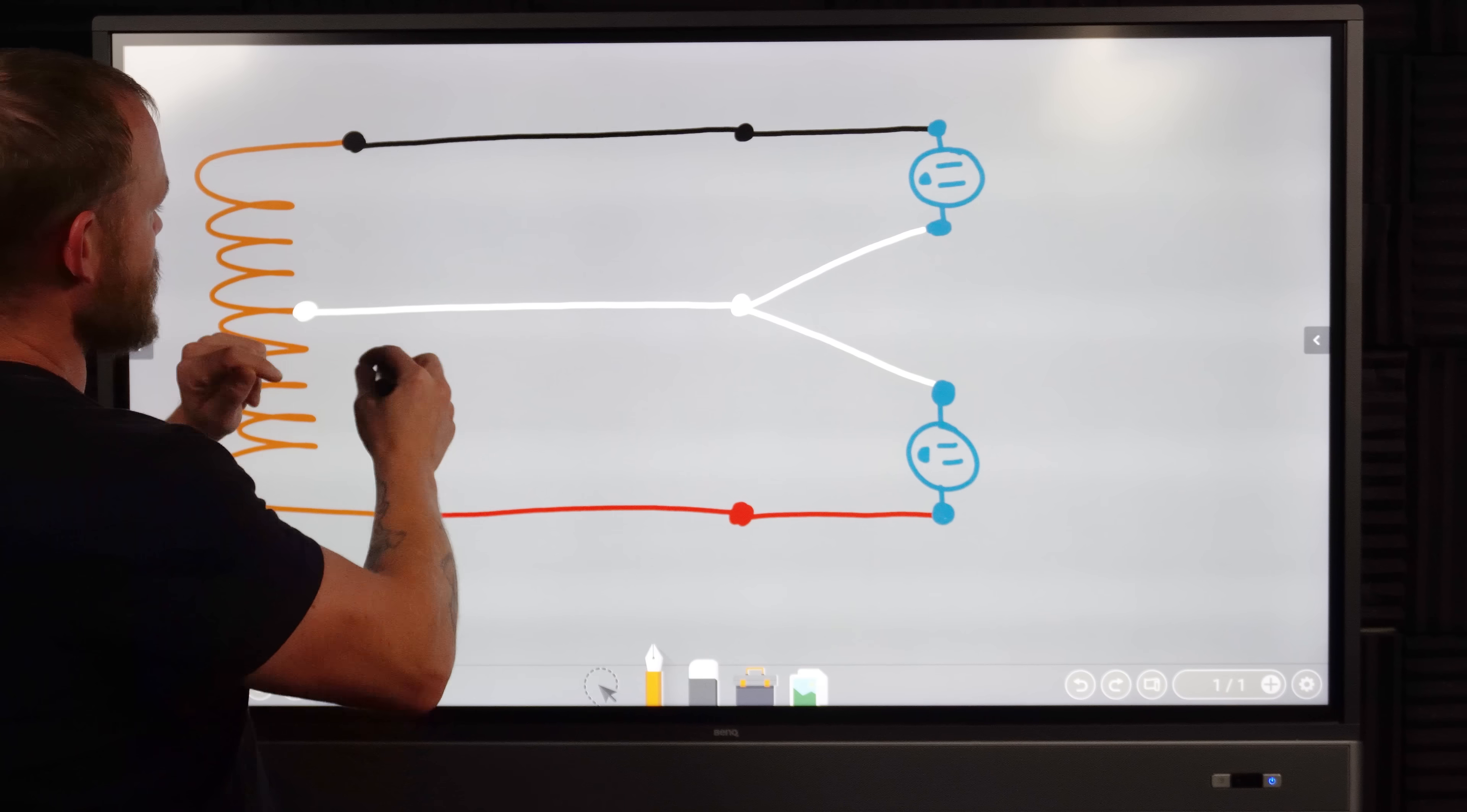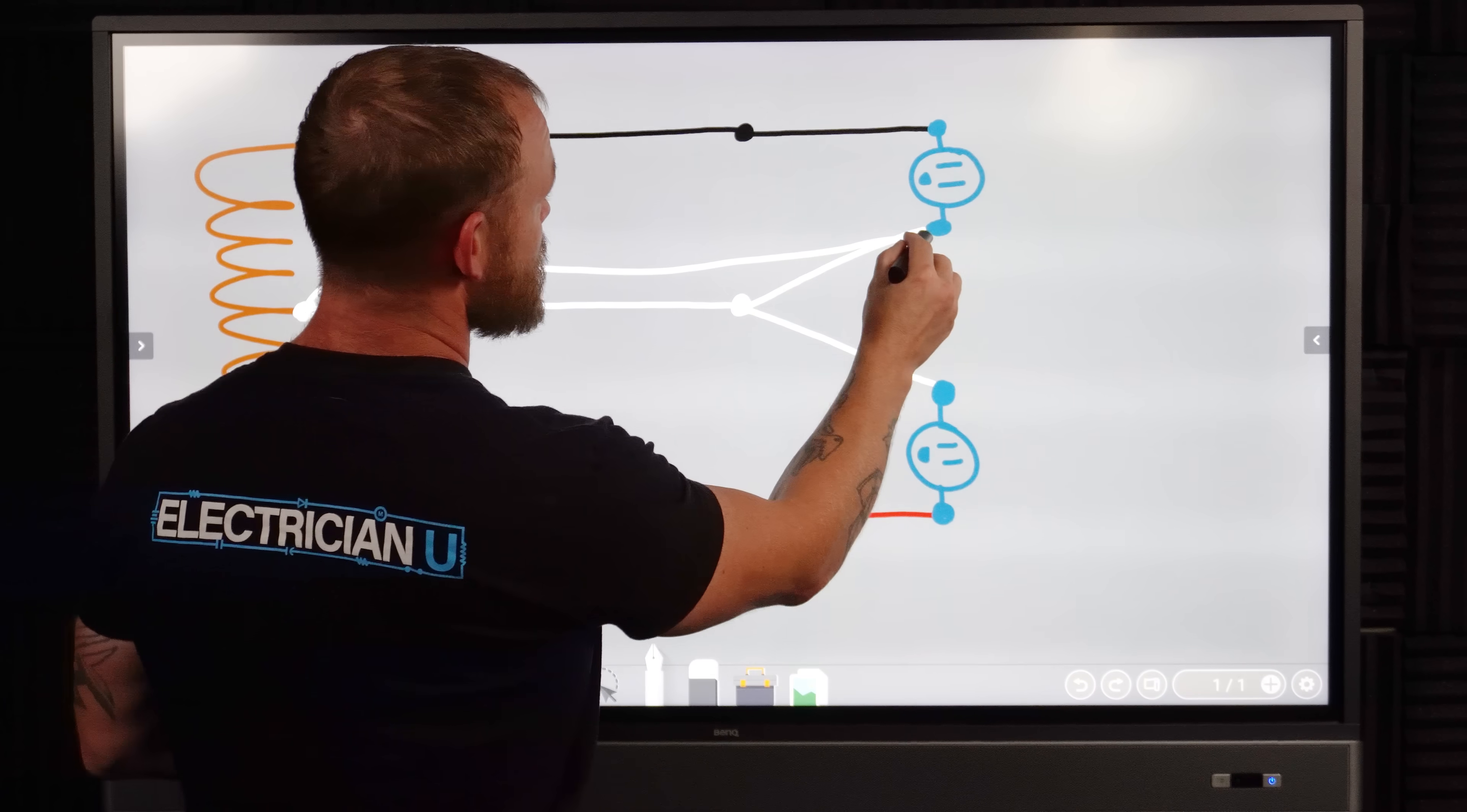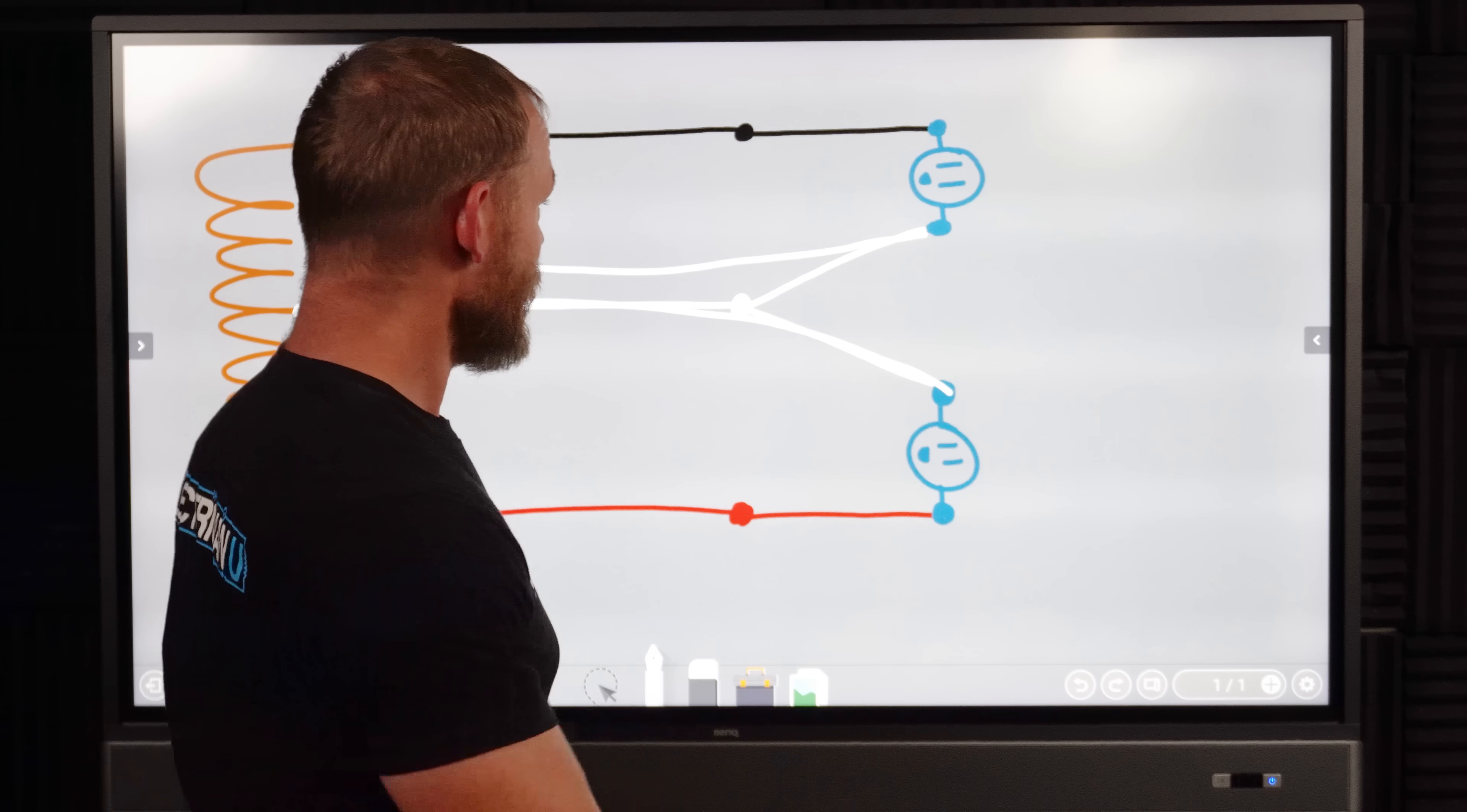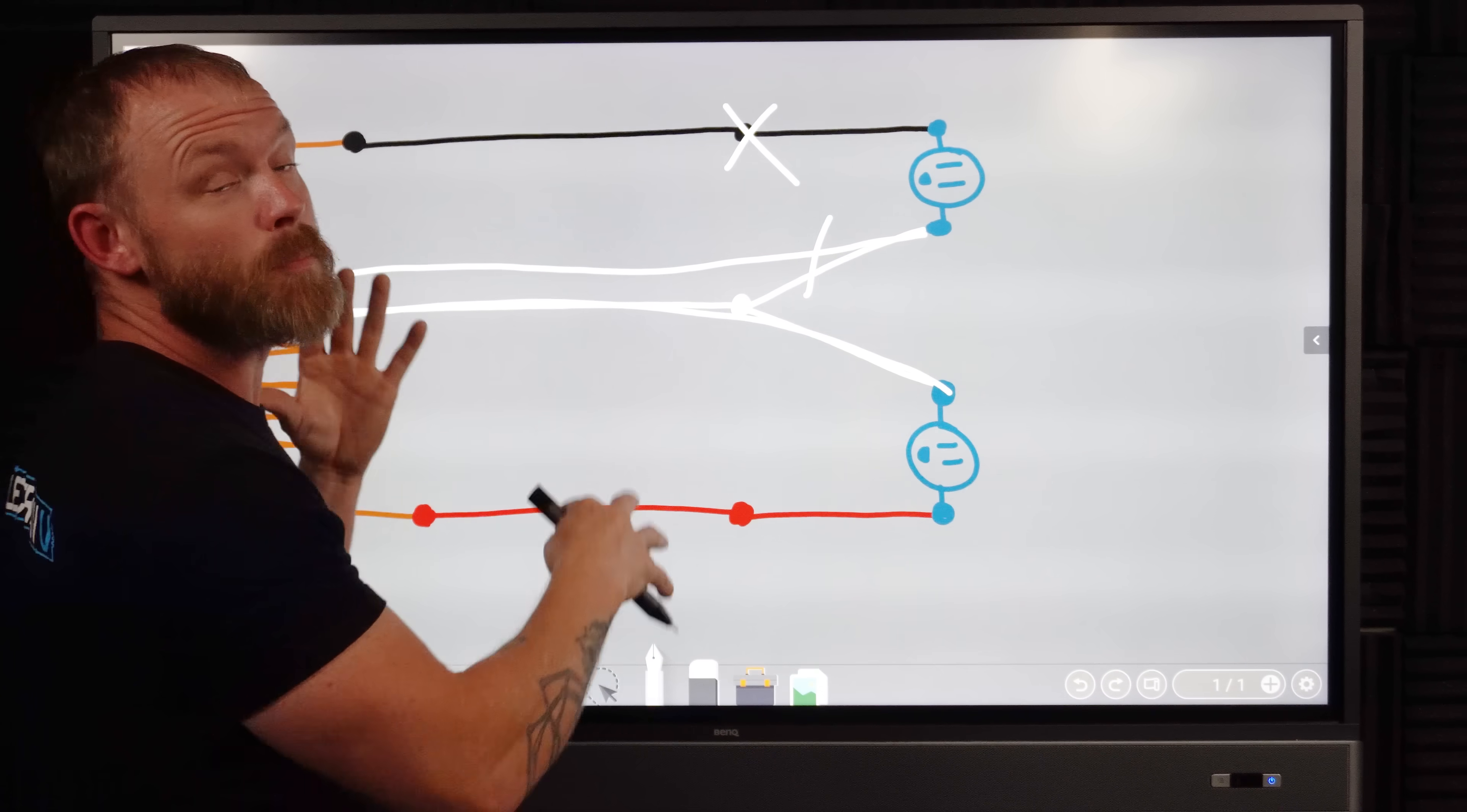So to understand what neutral current is, sometimes we have current on the neutral. A lot of times we don't, if there's a completely balanced circuit. Most times we do though, because nothing is truly that perfectly balanced. So what happens though, instead of having like, if we ran two 12 twos out to two different loads, we'd have like one neutral that went to this white and we'd have one neutral that went to the red. We'd have two pieces of 12 two. So we're not sharing a neutral at all.